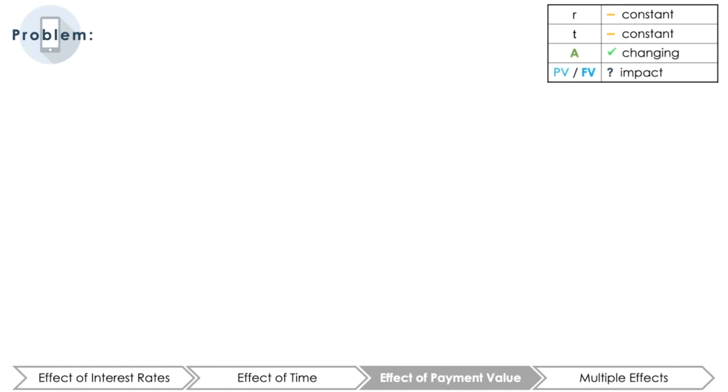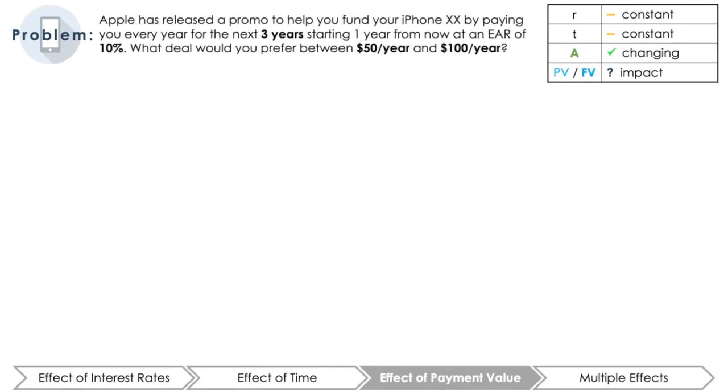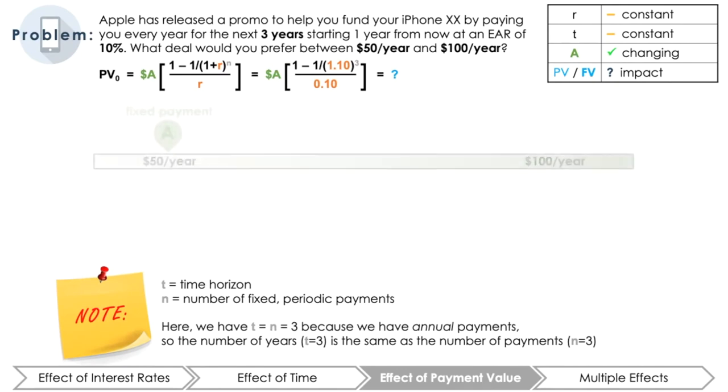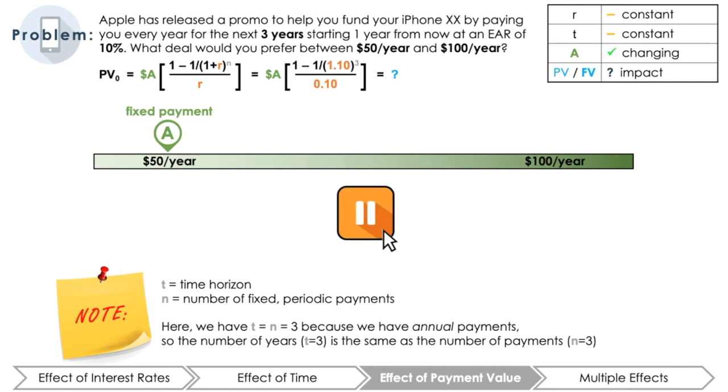Lastly, let's think about how the payment amount, which is A in the PV of an annuity formula, affects the PV calculation. Let's imagine that Apple has decided to release a promotion to help you fund your iPhone 20. They are willing to give you $100 every year for the next three years starting one year from now at an effective annual rate of 10%. What if they gave you $50 instead? Which cash flow would result in a higher present value? In other words, which promotion deal would you prefer? Pause here and calculate the present value of these annuities.